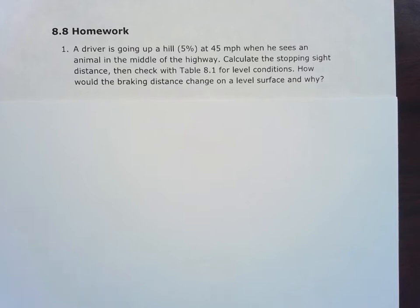We're going to start with Problem 1 from the Chapter 8 homework of FEP Highway Design. I've got a driver going up a hill, upgrade 5% at 45 miles per hour when he sees an animal in the middle of the highway. We want to find the stopping sight distance and check it with our Table 8.1 for level conditions and how would the braking distance change on a level surface and why. So we've got a grade here and we know that stopping sight distance is made out of two components.